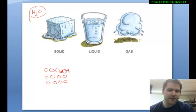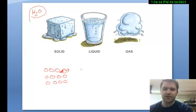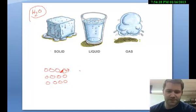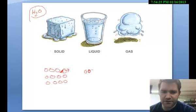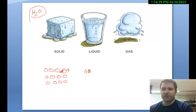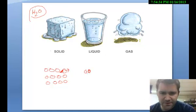As you heat something up, it gains kinetic energy. These things start vibrating faster and faster until that energy begins to be enough to actually break those bonds. Then these atoms can start to move around each other. They still are attracted to each other and they still can't just go anywhere — that's why a liquid will stay in the container it's in — but it changes shape because these things can move around each other.